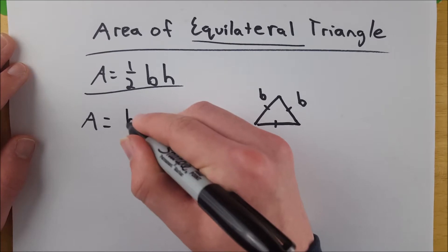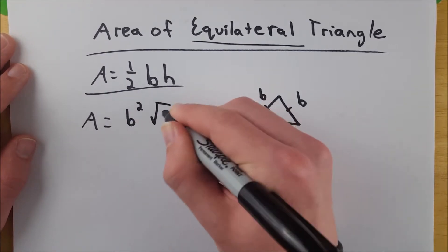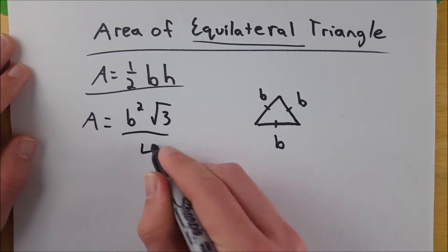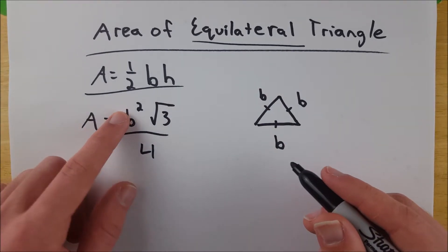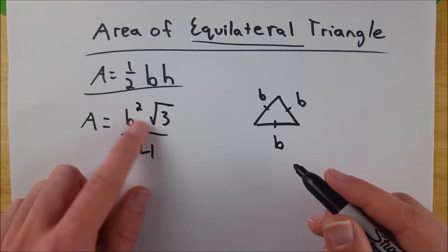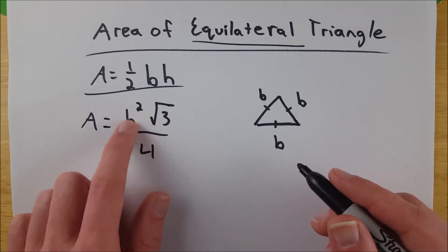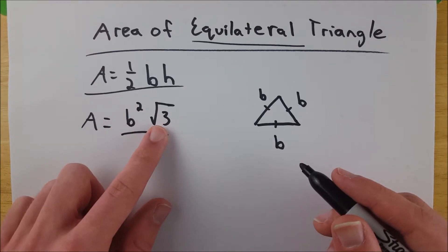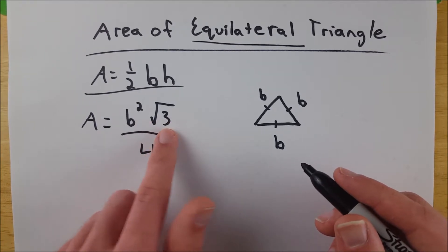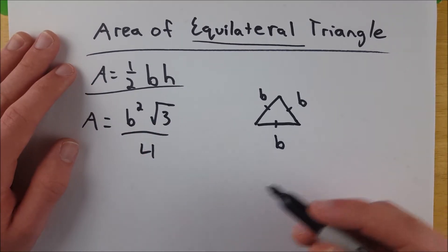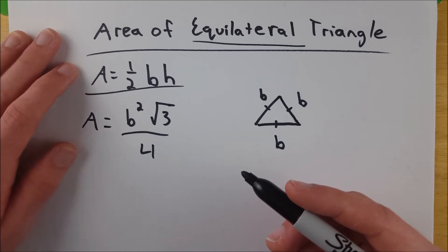So the formula is b squared multiplied by the square root of three, all over four. That's it. You take your base, square it, multiply it by the square root of three - which generally you'll just leave as b squared times root three - divided by four. Then you might do this multiplication on a calculator and round to the nearest tenth or hundredth or whatever you're asked to do.